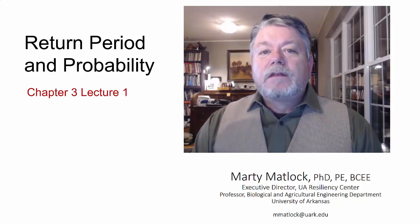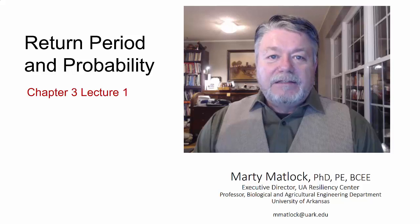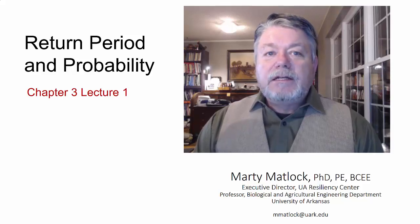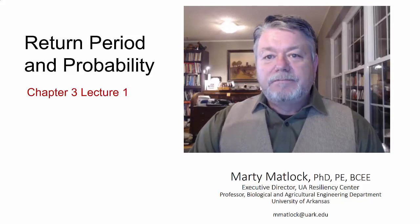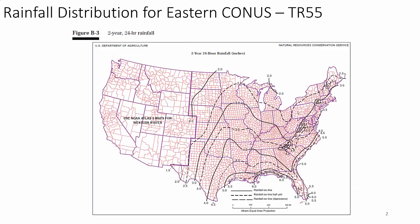Welcome to hydrology: return period and probability. This is chapter 3, lecture 1. I'm Dr. Marty Matlock. We're all familiar with the distribution of rainfall across the United States and with standard evening news predictions of rainfall for tomorrow or the seven-day outlook. Where does all this come from, and what does it really mean?